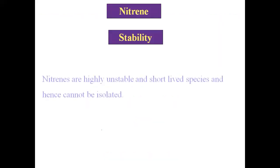Now let us see about the stability. Nitrenes are highly unstable. They are short-lived species and hence cannot be isolated. Some intermediates like carbocation and carbene can be isolated and studied. But in the case of nitrene, this is not possible because it is a highly unstable species, hence it is short-lived.